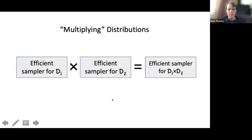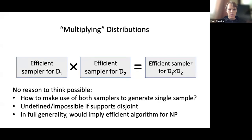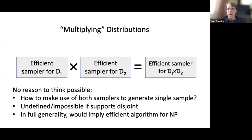What I really mean is: I want an efficient algorithm for sampling d1 and an efficient algorithm for sampling d2, and I want to combine these into an efficient algorithm for sampling this product distribution. Each sampler we just run and get a sample from some distribution. How do we possibly use that to generate a single sample from a different distribution? It's not clear.